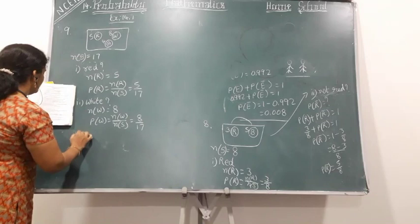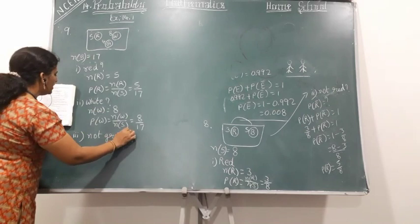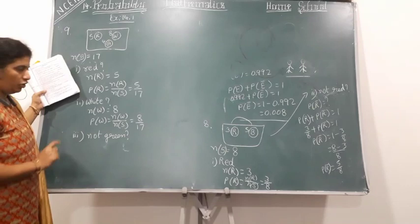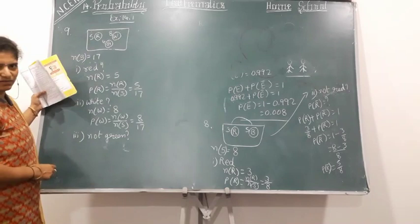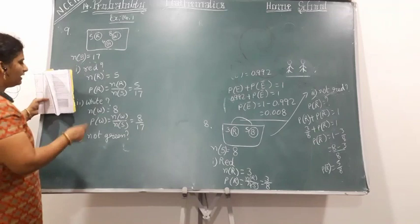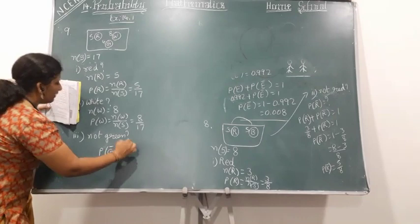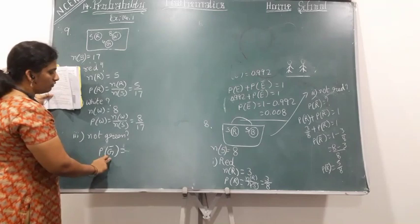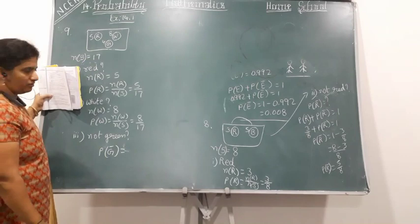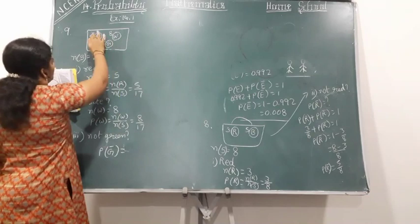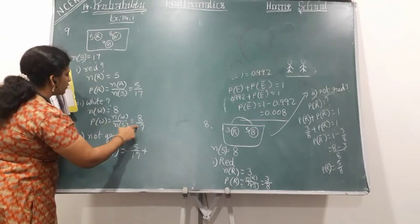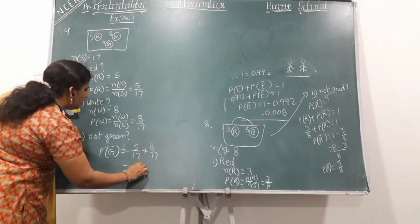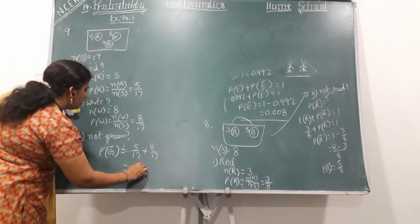Third sub-question: not green. First we should know what green is, then not green means the other two. P(G bar) — not green. You can add the other two probabilities to get not green. Red probability is five by seventeen and white probability is eight by seventeen. Adding them: five plus eight equals thirteen, so thirteen by seventeen is your answer.